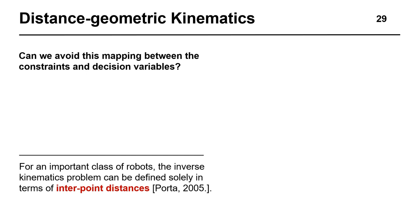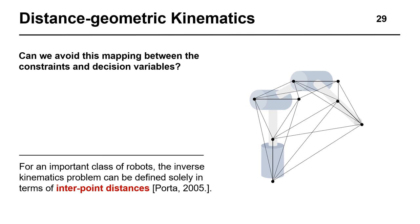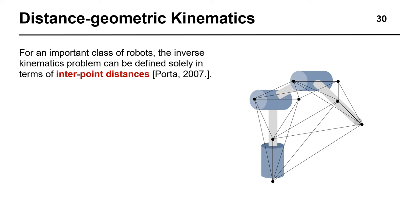One interesting approach to achieving this was found by Porta. He showed that the inverse kinematics problem can be defined solely in terms of distances between points rigidly attached to the robot. Further, he showed that the problem can be solved for a specific class of manipulators using algebraic methods. Inspired by this approach, my co-author Matthew Giamou and myself set out to answer two research questions. The first question is, can we adapt this approach for optimization-based formulations? And the second question is, can we extend this approach to include other common constraints as well?